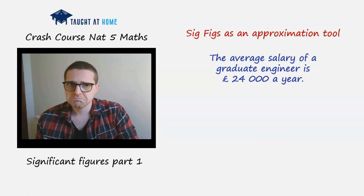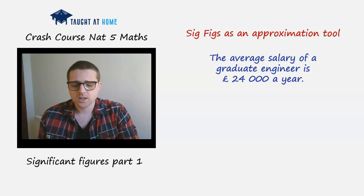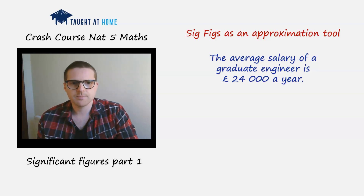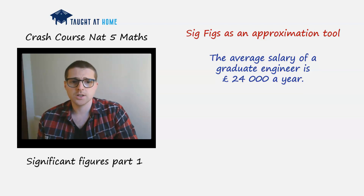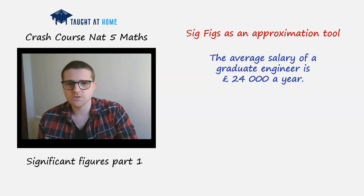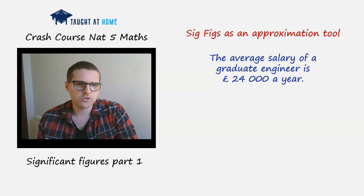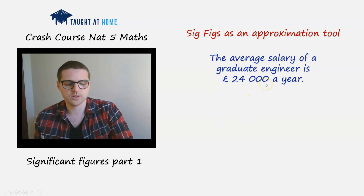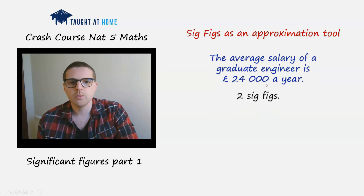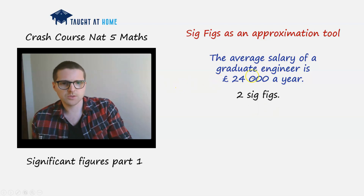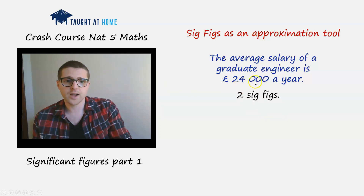Let's work out how many significant figures various numbers contain. The average salary of a graduate engineer is £24,000 a year. It might be £23,675 or £24,134, but we say approximately £24,000. There are two significant figures: the 2 and the 4 are non-zero numbers, and the zeros represent where the decimal point is.